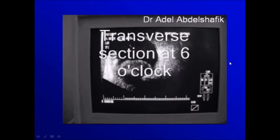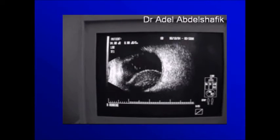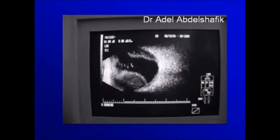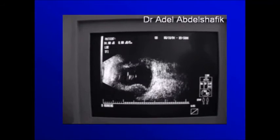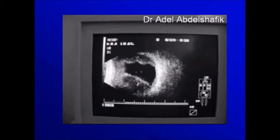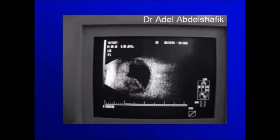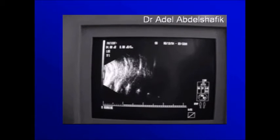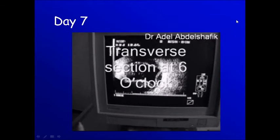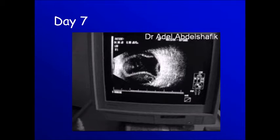Another example with hemorrhagic choroidal detachment. This is a postoperative case following cataract and glaucoma surgery. After a week, in the same patient, you notice some translucent areas inside the choroidal detachment. This is a sort of hemolysis.